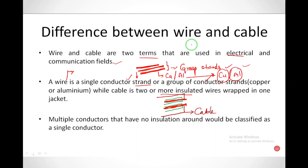Multiple conductors that have no insulation around them would be classified as a single conductor. Multiple conductors without an insulation around them will be considered as a single conductor.